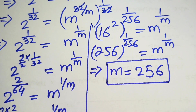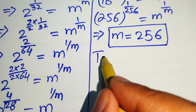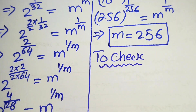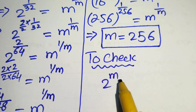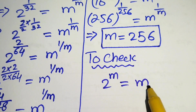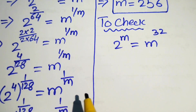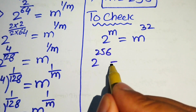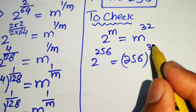Now we check whether this value of m satisfies the original equation. We copy down the equation: 2 to the power of m equals m to the power of 32. Replacing m with 256, we get 2 to the power of 256 equals 256 to the power of 32.